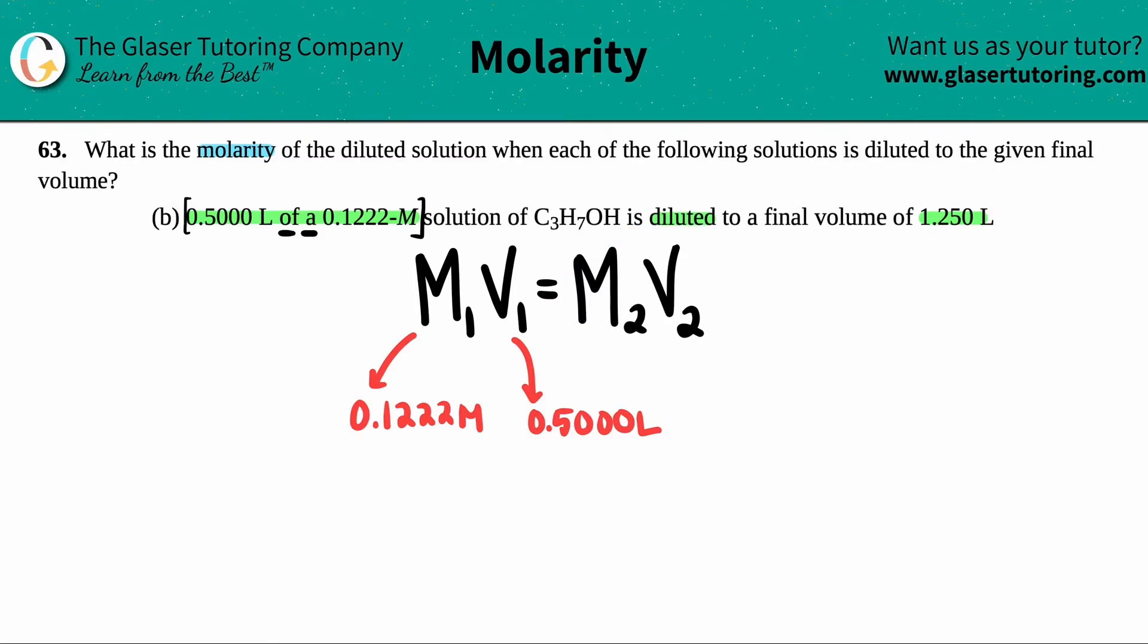Now we just kind of find out what the other molarity and volume is. Well, they said that we were diluting it to a final volume of 1.250, so that's this guy: 1.250 liters. The liters unit matches, so that's all good. And what's the molarity? Well, that's the question. What is the molarity? So I'm solving for M. That's X. Maybe I'll put it over here.